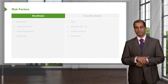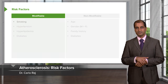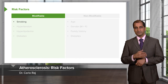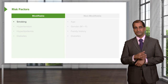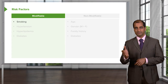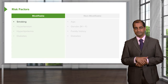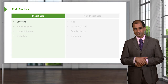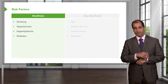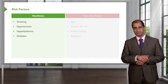What are those modifiable risk factors? Smoking — try to prevent your patient from smoking, or if the patient has already started smoking, to quit the smoking, whatever the cessation methodologies might be. Hypertension, hyperlipidemia, diabetes, metabolic syndrome. These are the modifiable risk factors.